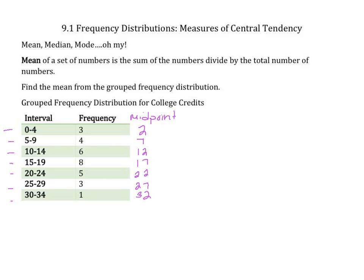Then I'm going to multiply the frequency by the midpoint. So the products are: 6, 28, 72, 136, 110, 81, and 32. Adding all those up, we get 465.